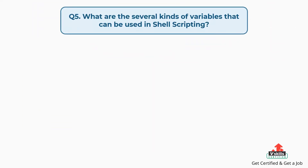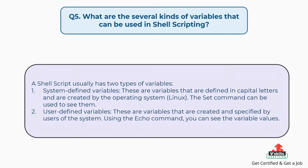Question number five: what are the several kinds of variables that can be used in shell scripting? A shell script usually has two types of variables. First, system-defined variables — these are defined in capital letters and are created by the operating system (Linux); the set command can be used to see them. Second, user-defined variables — these are created and specified by users; using the echo command, you can see the variable values.